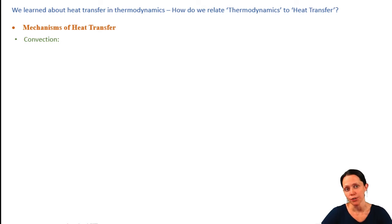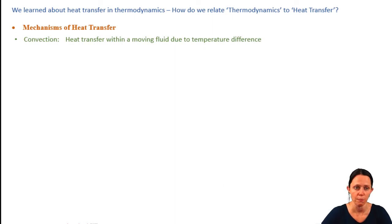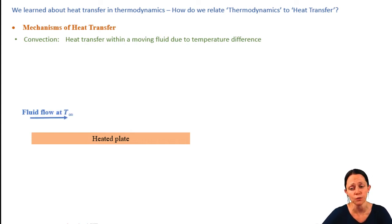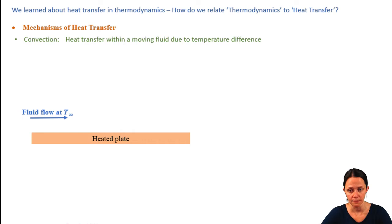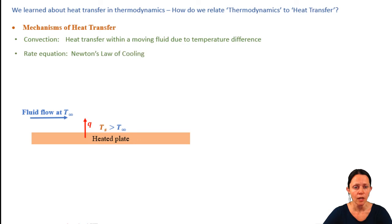In addition to conduction, we can transfer heat by convection, where heat flows within a fluid because the fluid itself is moving and there's a temperature gradient within that flowing fluid. Say you have a heated plate with a fluid flowing by at some free-stream temperature T-infinity — far enough away from the plate that the fluid temperature isn't influenced by the plate. If the surface of the plate is hotter than the fluid, heat flows in the positive y direction. Newton's law of cooling defines the heat transfer rate due to convection.